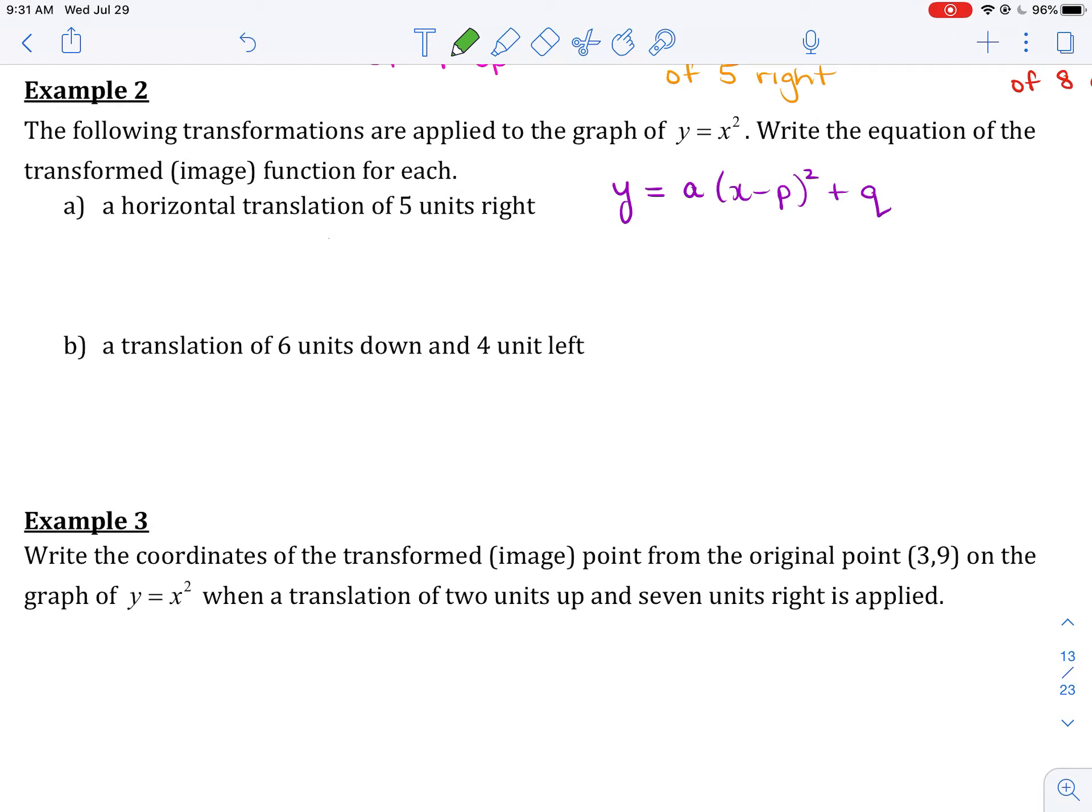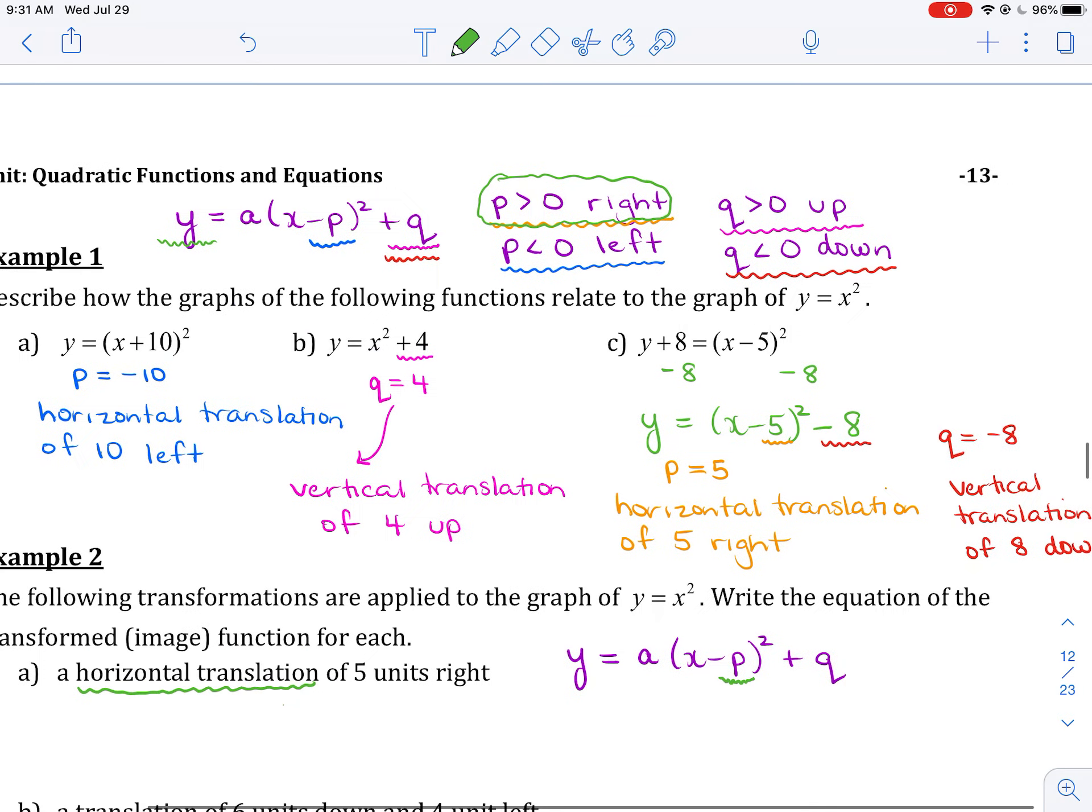In part A, we want a horizontal translation of 5 units to the right. So if we want a horizontal translation, the first thing we have to recognize is whether it's A, P, or Q that causes our horizontal translation. And hopefully we all say that's what P does. Now, if we want to go to the right, we need to have P being a positive value.